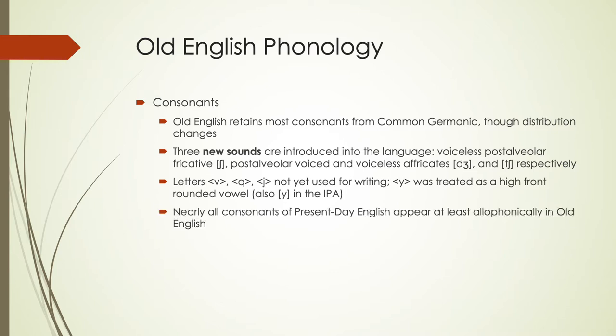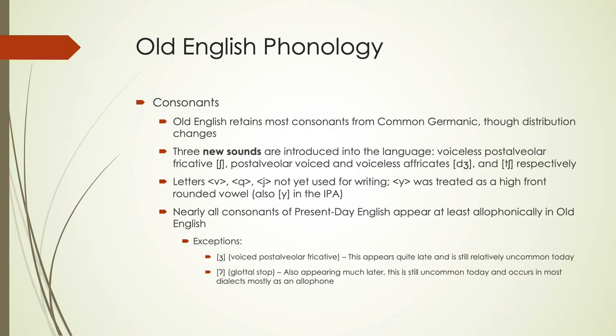Most of all the consonants that we have today in present-day English do appear at least as allophones in Old English. So even if the system itself didn't have them as separate phonemes at the time, almost all of the sounds we'll see in Old English are at least allophonically found then that we have today. There are a couple exceptions, though, and that's our 'zh' sound and our glottal stop — these sounds appear much later in English.